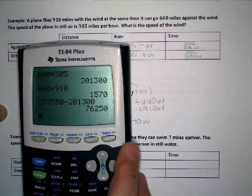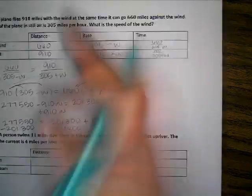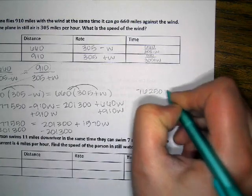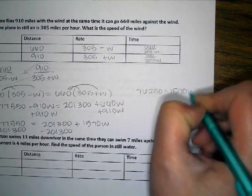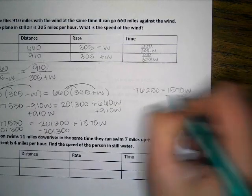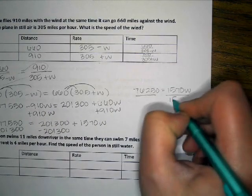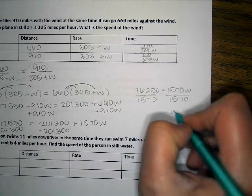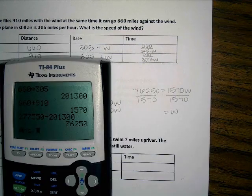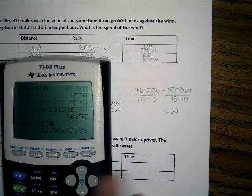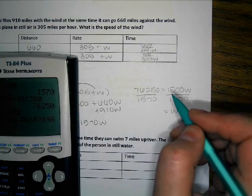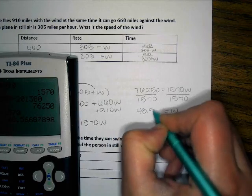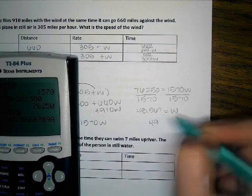76,250 equals 1,570 W. And then I'll go ahead and divide so I can solve for W. I get 48.567.